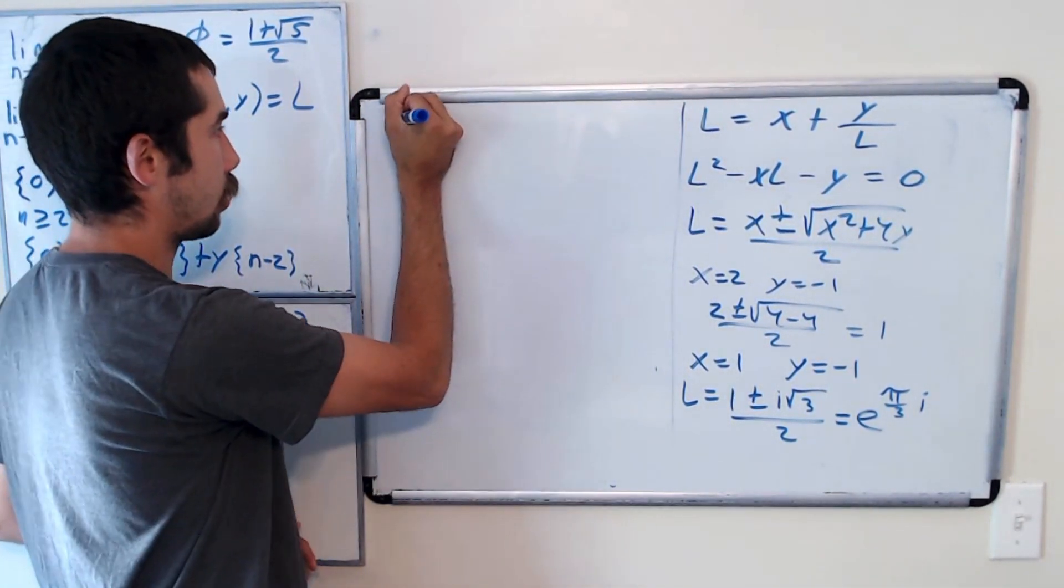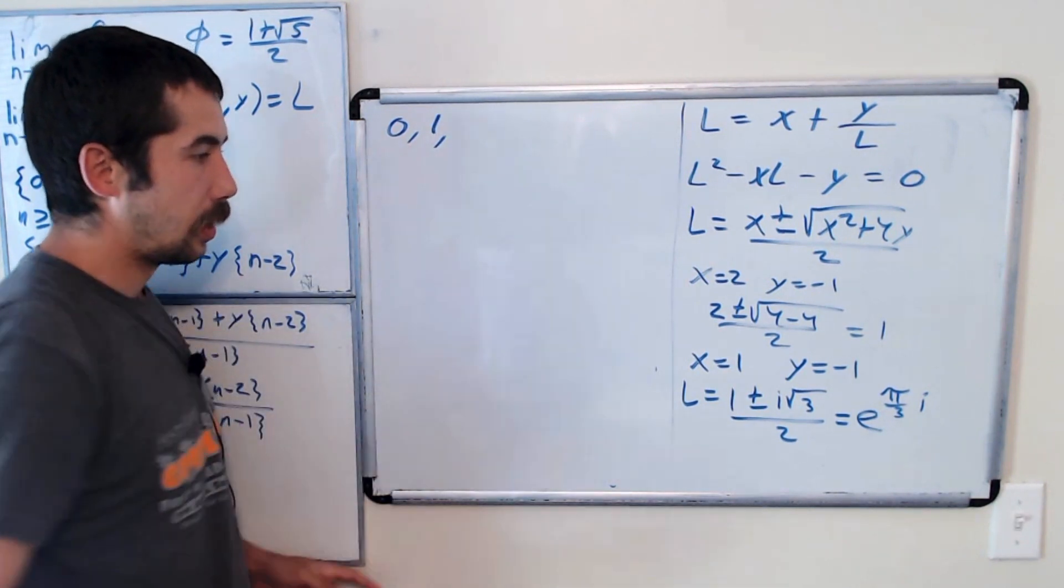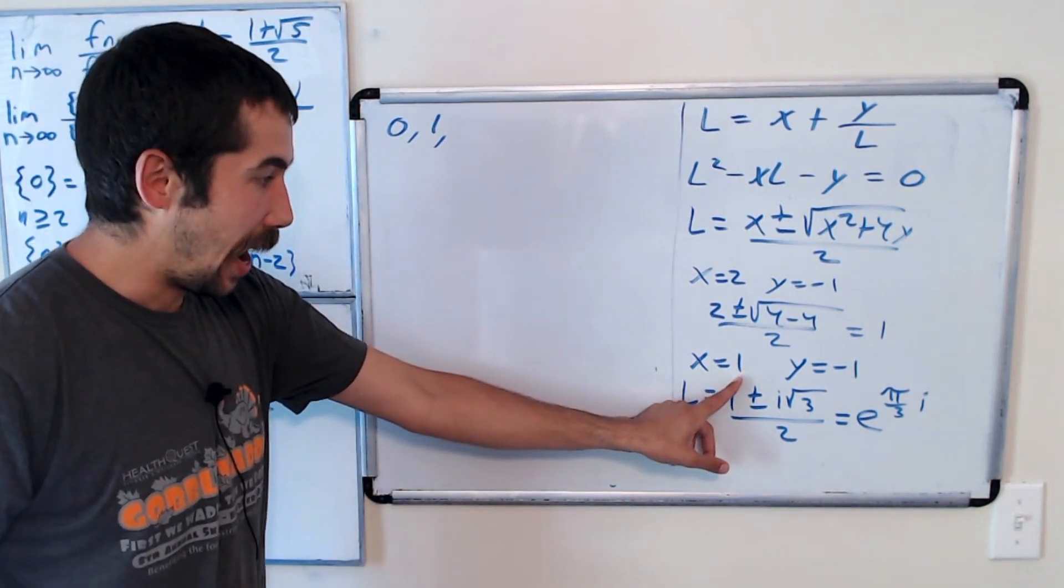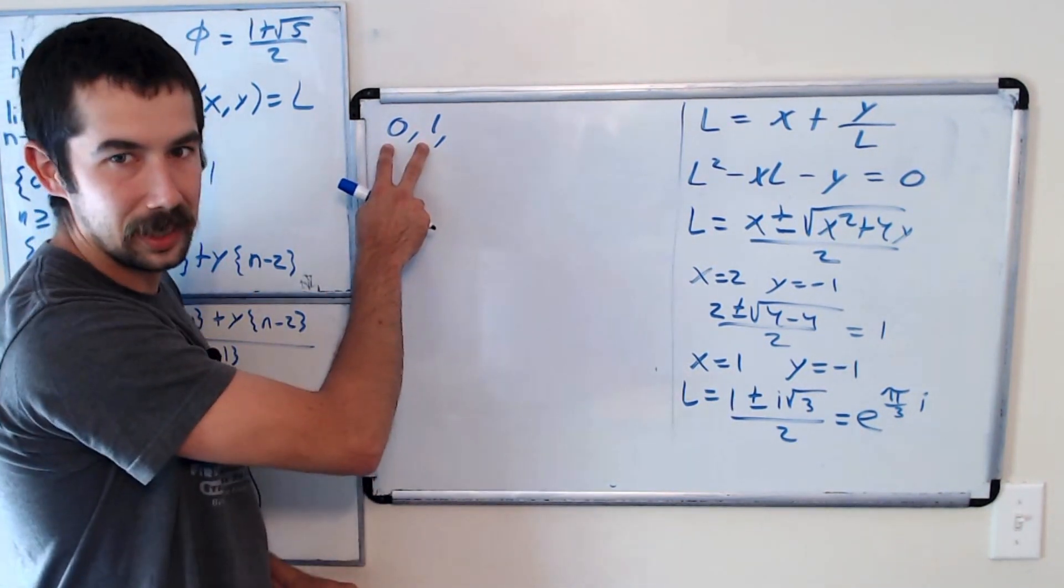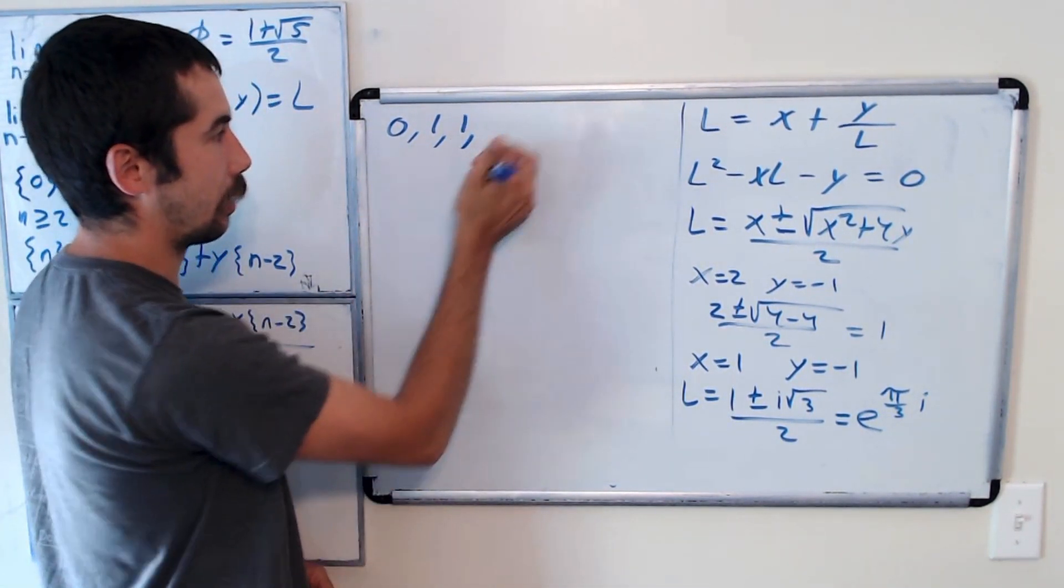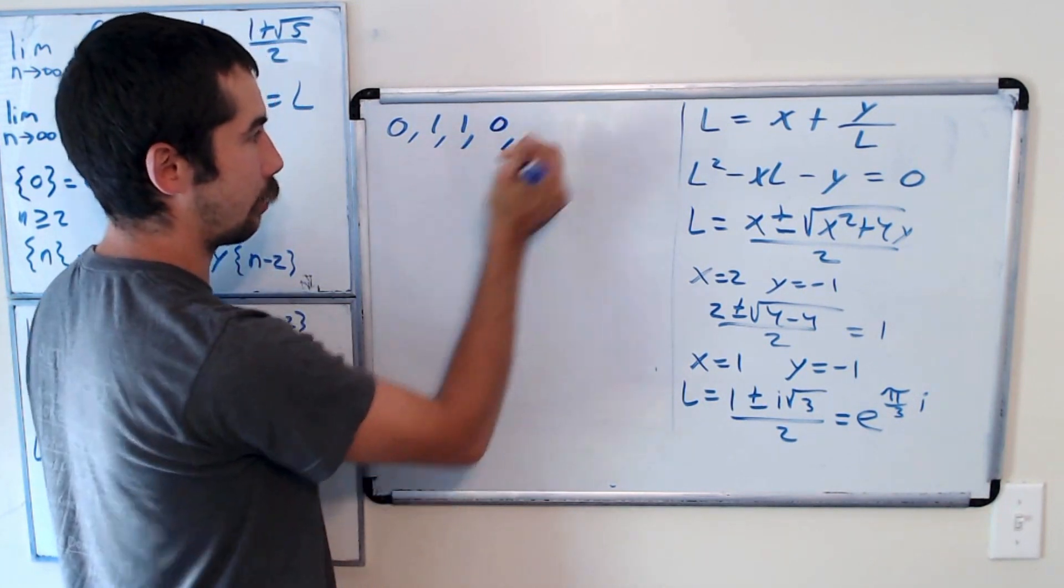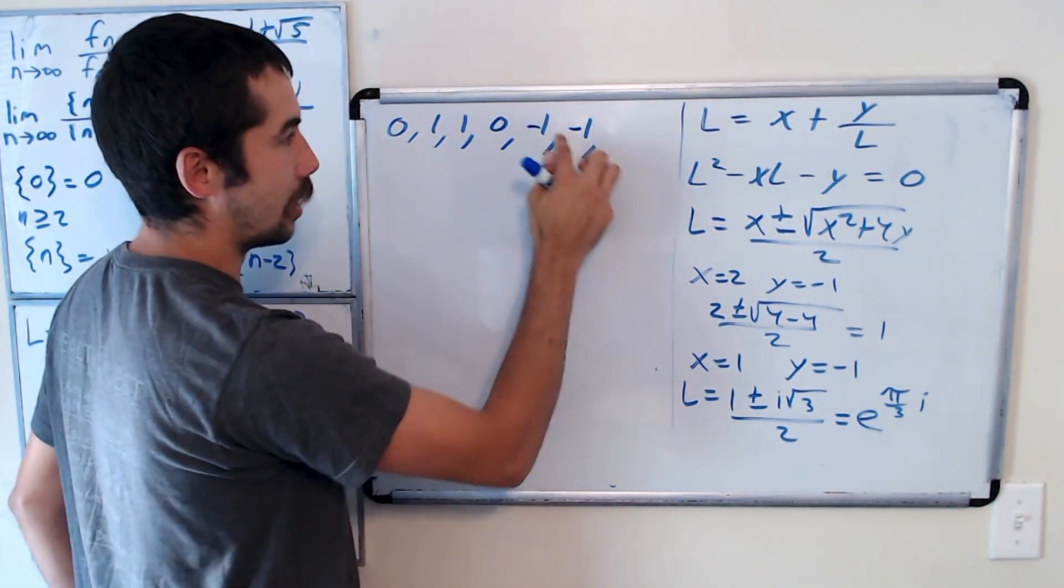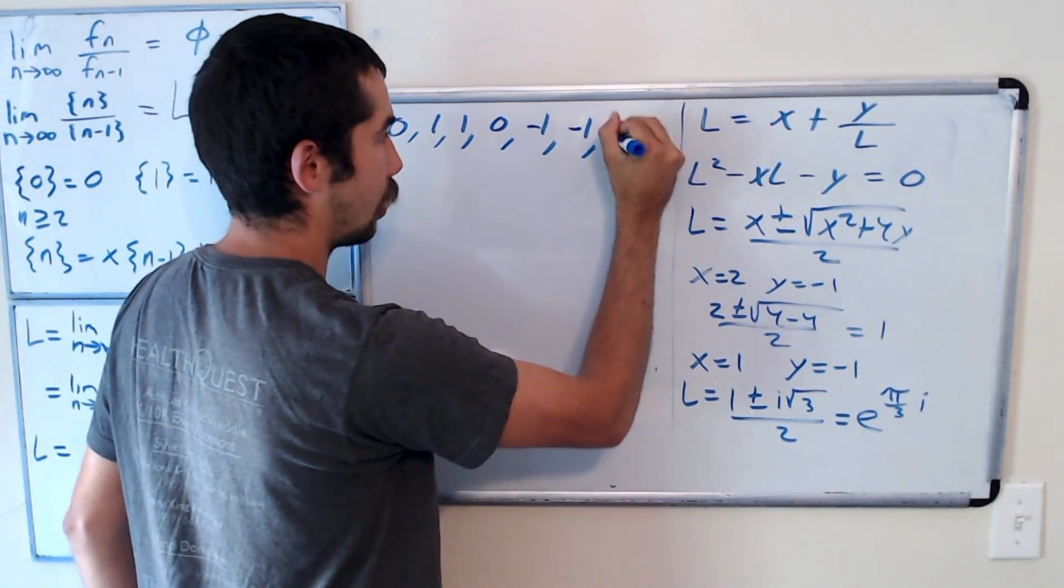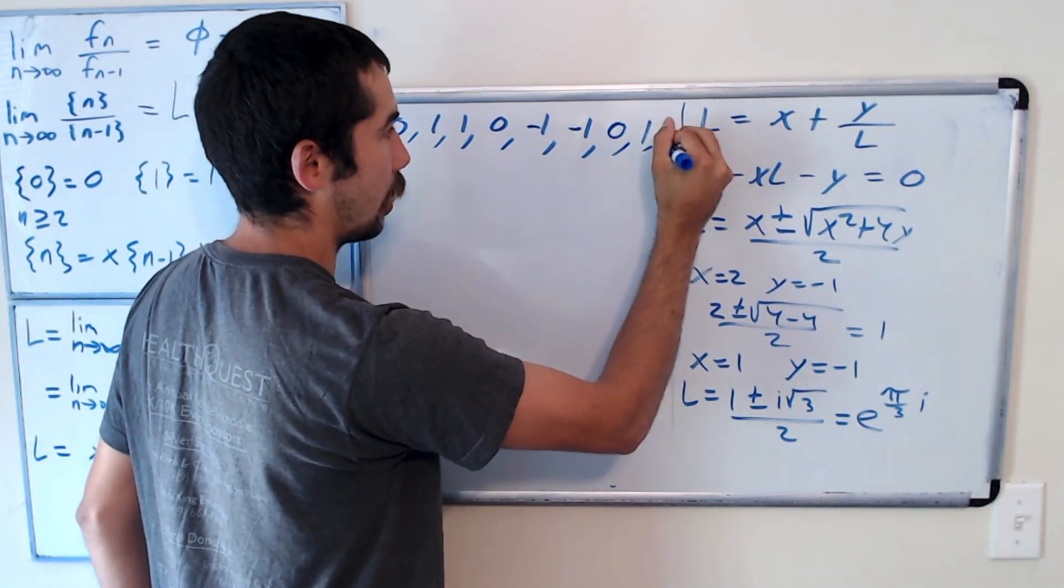So again, we start with 0, 1. And so what are we going to do? We're going to add the previous term and subtract off the term before that. So basically, we're just going to take the difference. So we get 1, take the difference, we get 0, take the difference, negative 1, take the difference, negative 1, take the difference, 0, 1, and so forth.